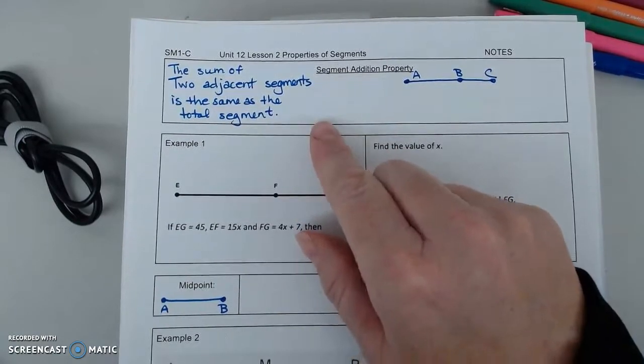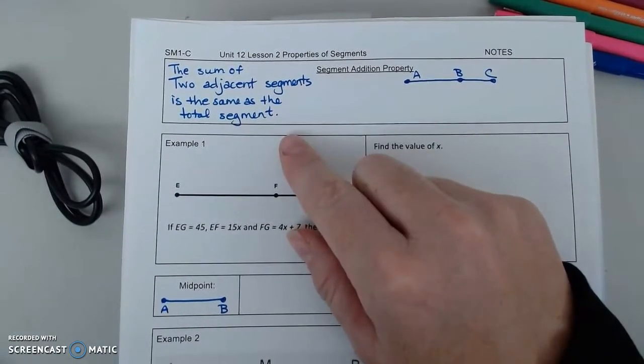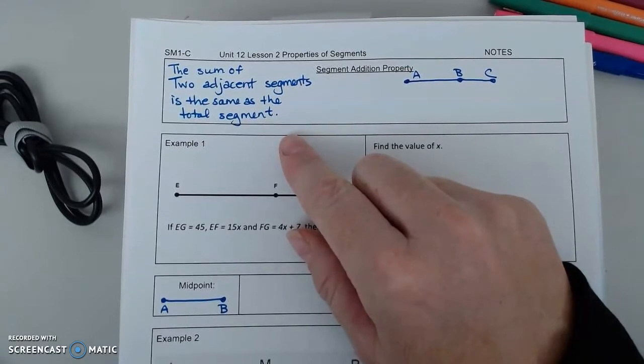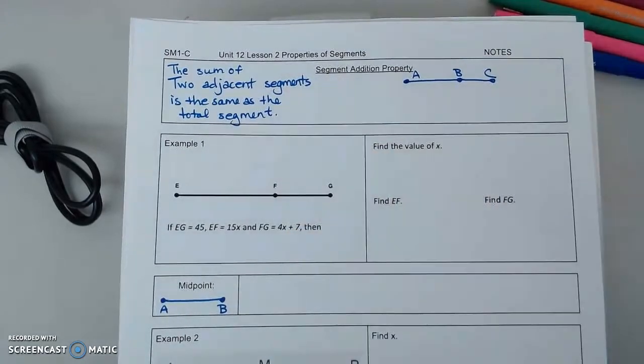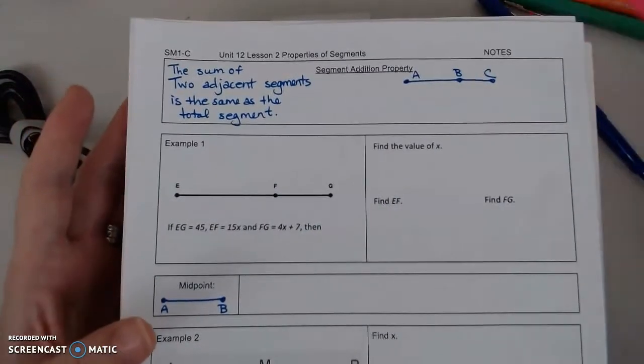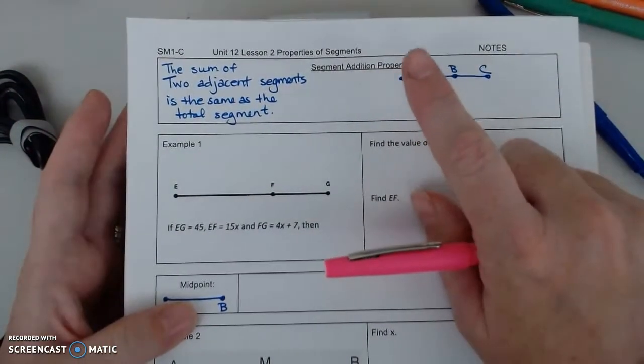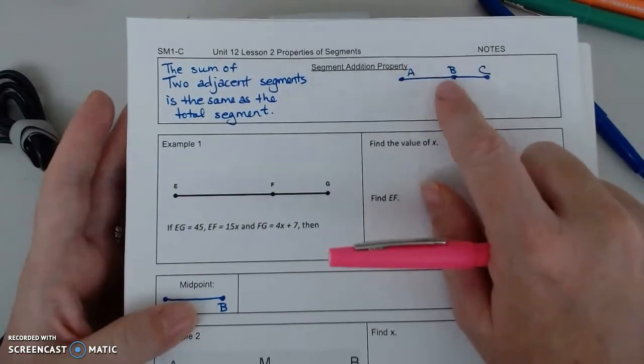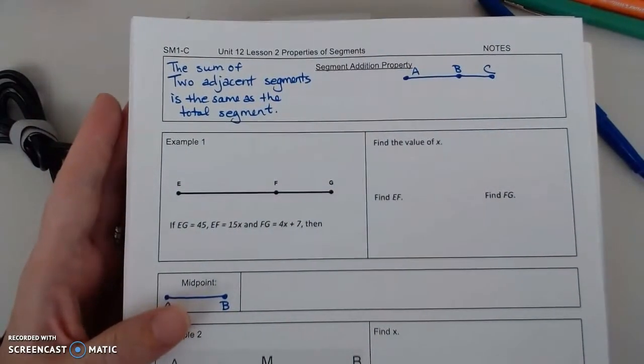So the segment addition property says that the sum, which means to add, of two adjacent segments is the same as the total segment. So on my drawing, if I've got segment AC, it also has the point B somewhere in the middle.